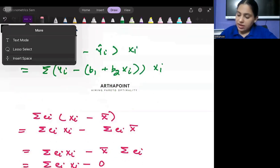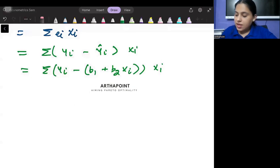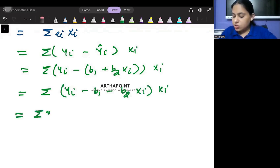So I will get this as ∑(Yi - B1 - B2*Xi)*Xi, and this will be ∑Yi*Xi - B1*Xi - B2*Xi².